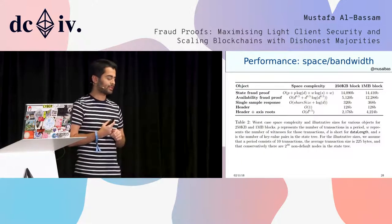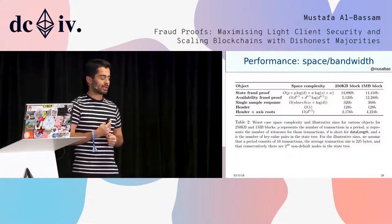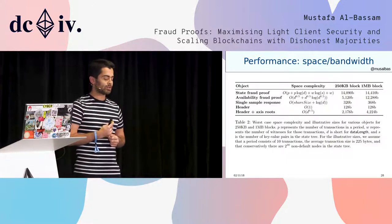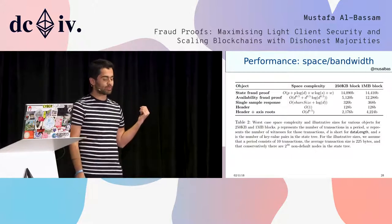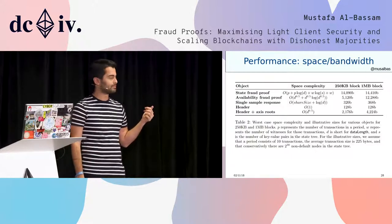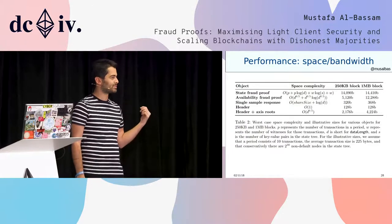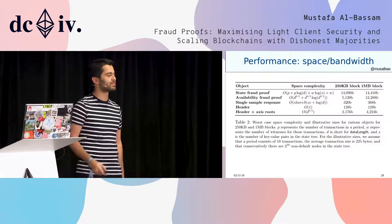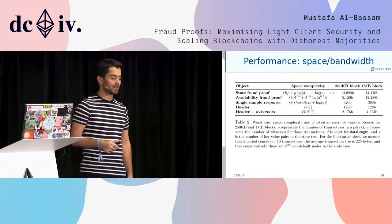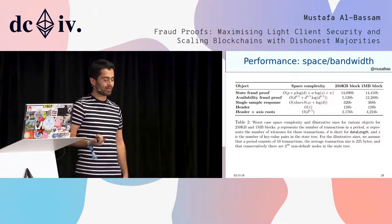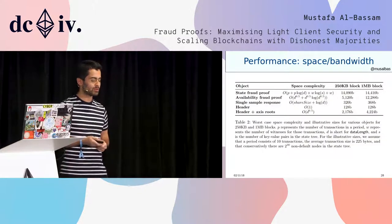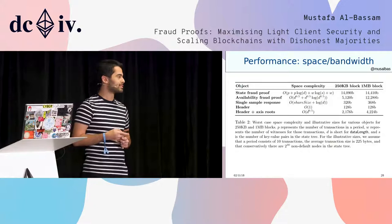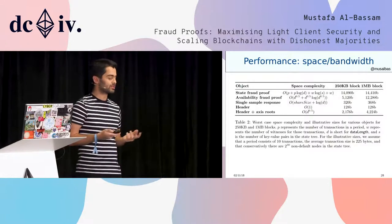In terms of computation, it's all quite efficient. Generating the state fraud proof looks expensive, but that's because my sparse Merkle tree implementation is quite inefficient. Verifying fraud proofs, verifying sample responses, and verifying availability fraud proofs are all in sub-millisecond times.